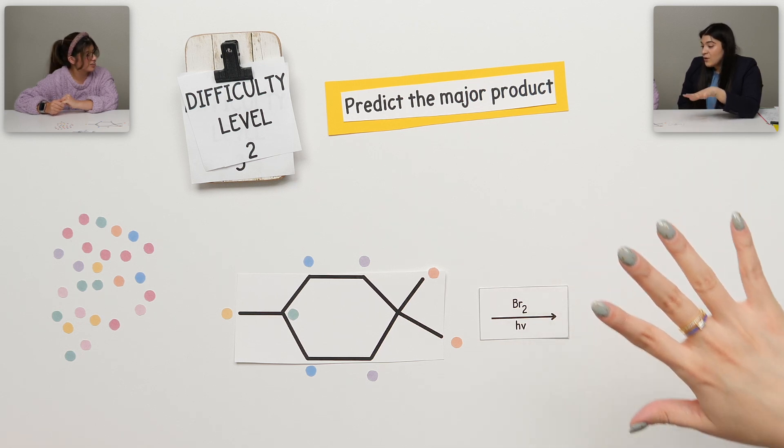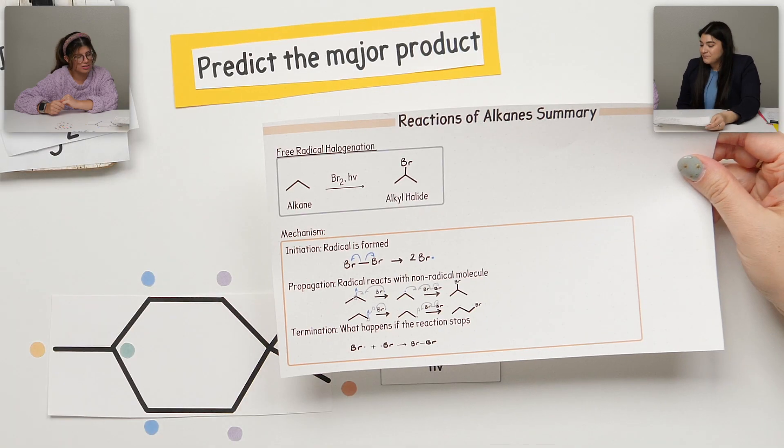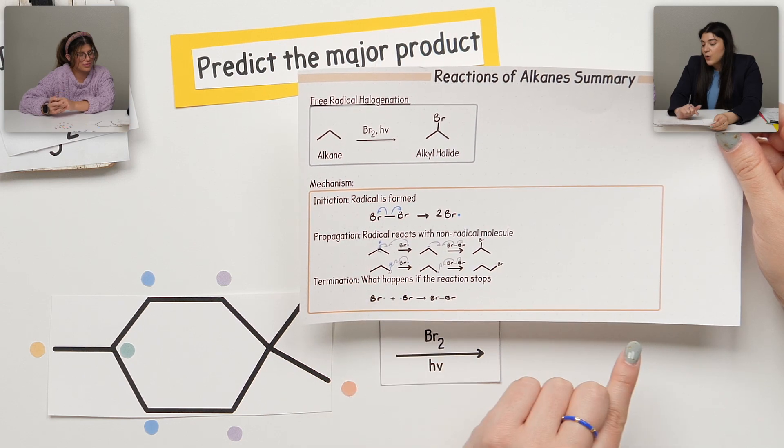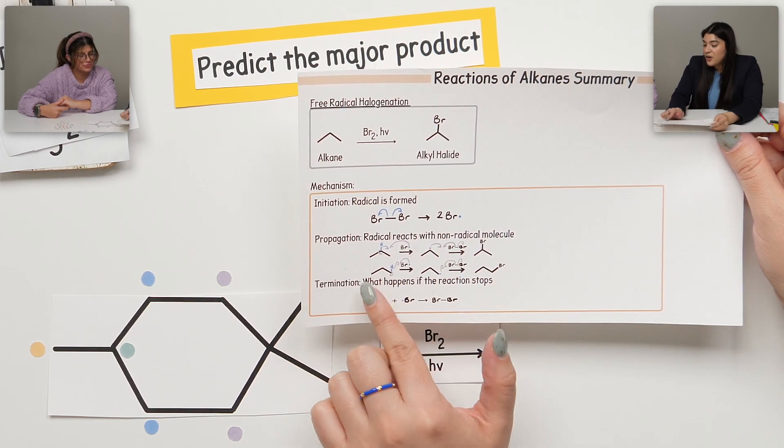That all goes back to the mechanism. Going back to specifically our propagation step, where we're combining that radical with a non-radical molecule and it's taking it from the bond of the hydrogen. That's why a hydrogen had to have been available to us.